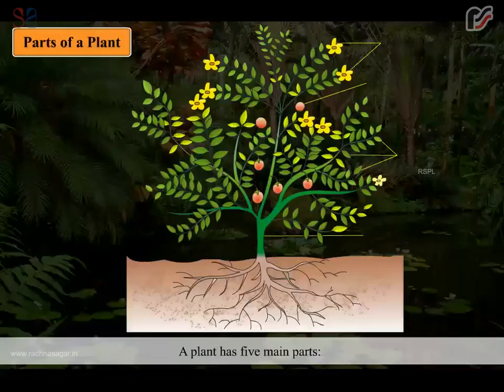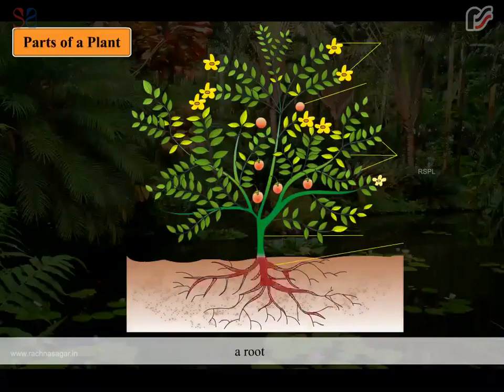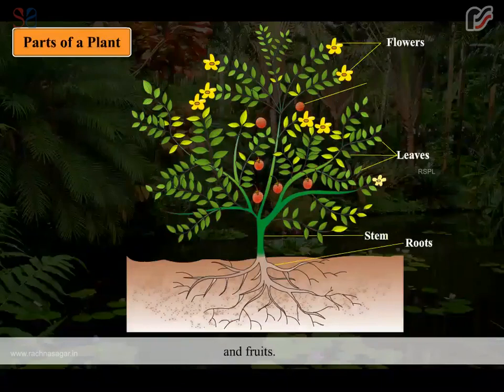A plant has five main parts: a root, stem, leaves, flowers and fruits.